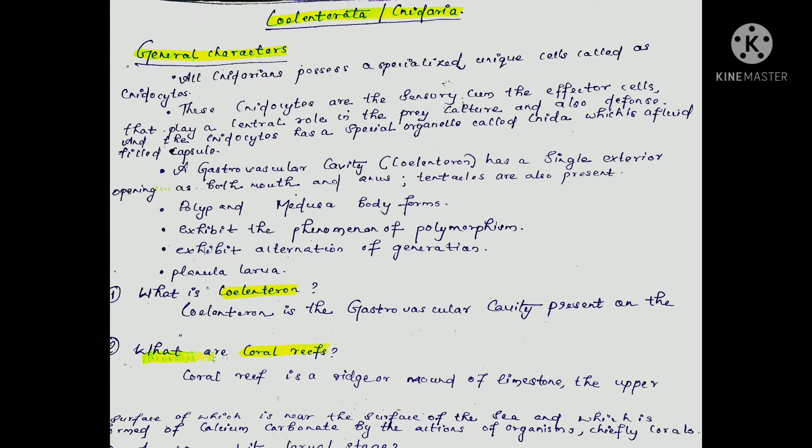Now for important questions: What is the coelenteron? The coelenteron is the gastrovascular cavity. What is a coral reef? A coral reef is a ridge or mound of limestone at the upper surface of the sea, which is formed by calcium carbonate through the actions of organisms, chiefly corals.